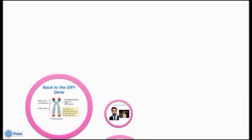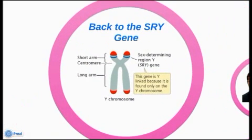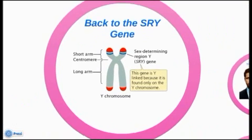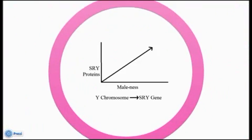Human embryos with XY chromosomes possess a gene called SRY on the Y chromosome. Human embryos develop into females by default, but SRY in males initiates development of the male phenotype. This gene codes for a protein of the same name that is synthesized in the cytoplasm of cells, which then activates other genes that control the development of male characteristics. The SRY protein must be able to get into the nucleus in order for this to occur.